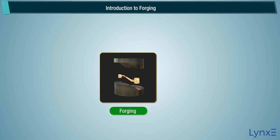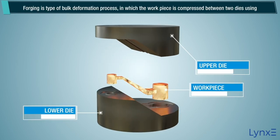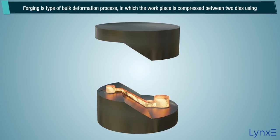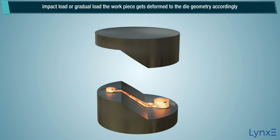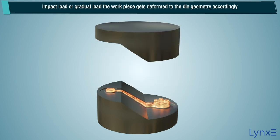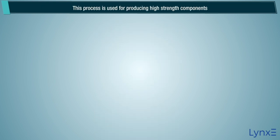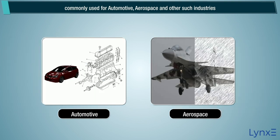Forging is a type of bulk deformation process in which the workpiece is compressed between two dies using impact load or gradual load. The workpiece gets deformed to the die geometry accordingly. This process is used for producing high-strength components commonly used for automotive, aerospace, and other such industries.